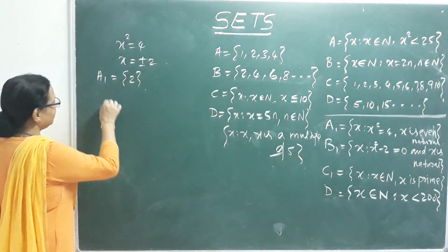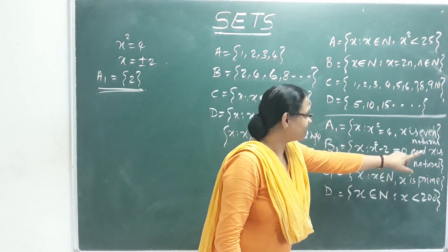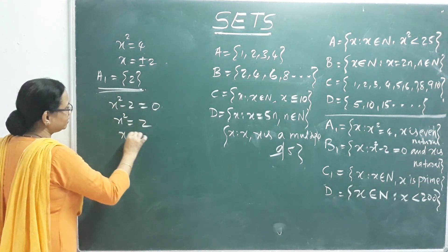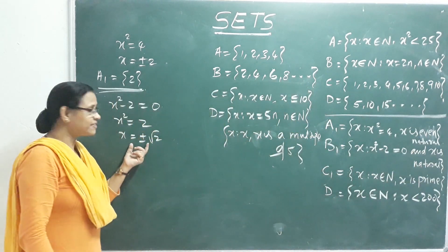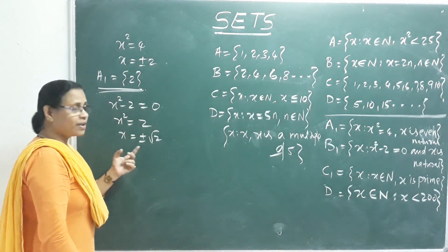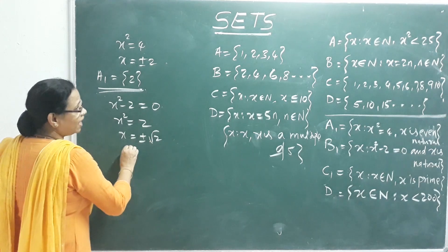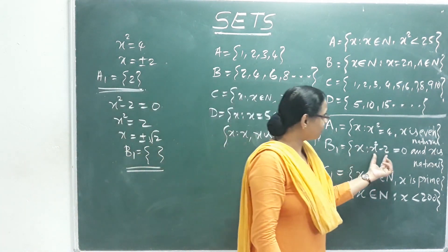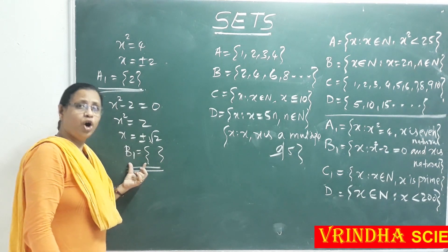B1 = {x : x² - 2 = 0, x ∈ N}. Solving: x² = 2, so x = ±√2. But √2 is irrational — it is not a natural number. Therefore B1 has no elements satisfying the condition, making B1 a null set (void set or empty set).